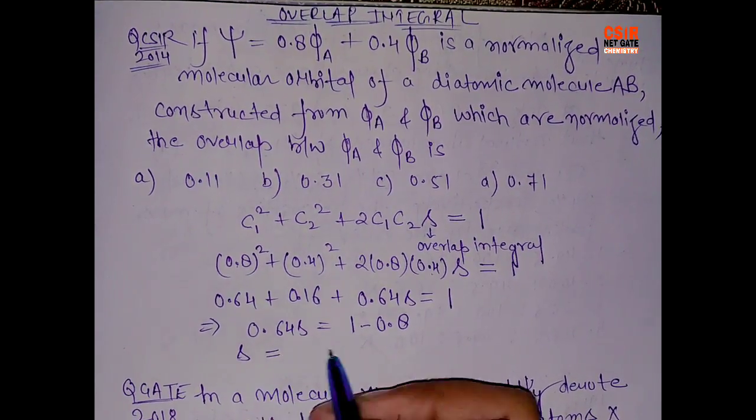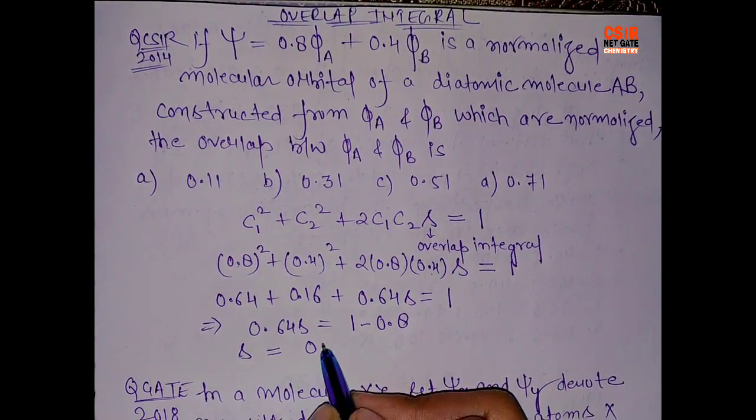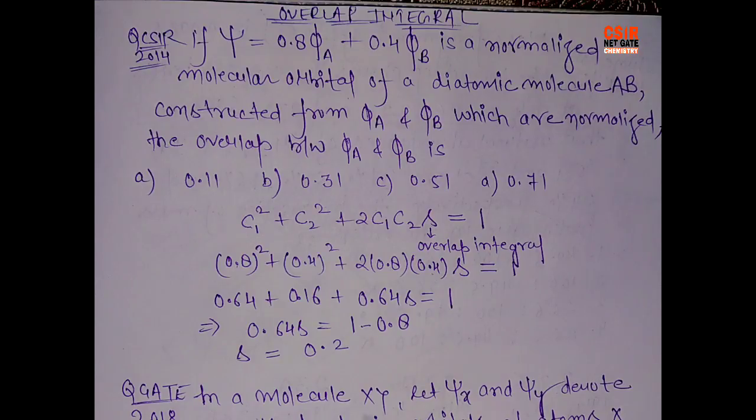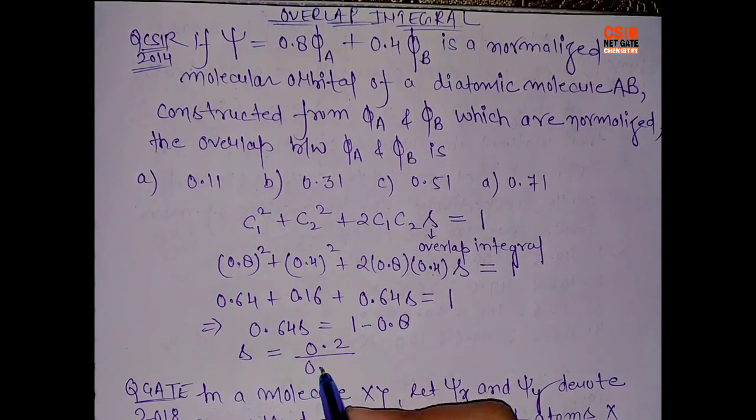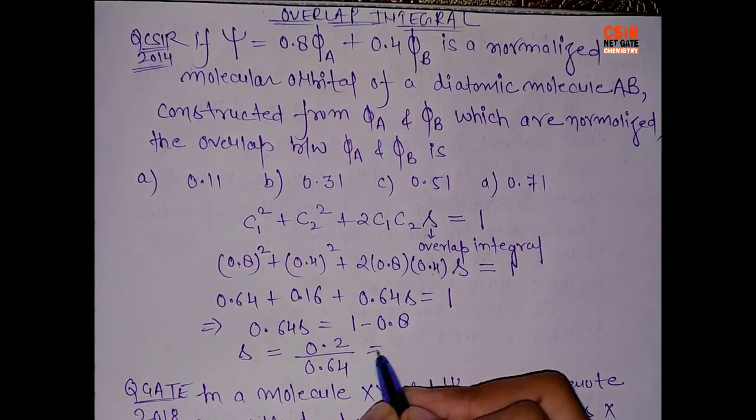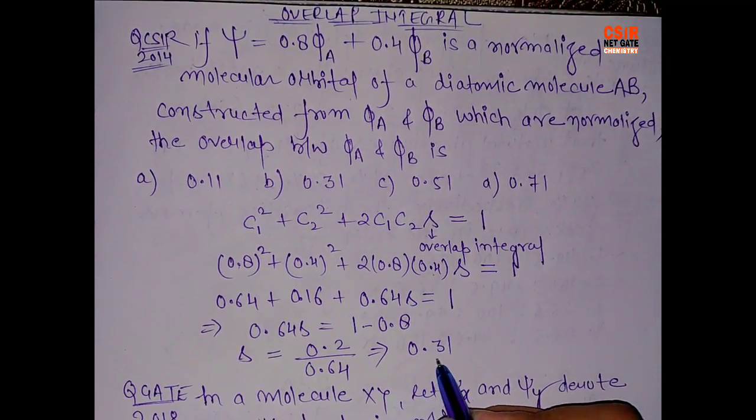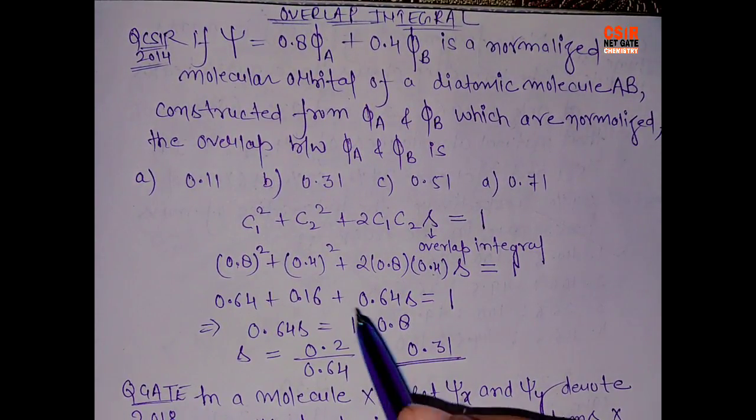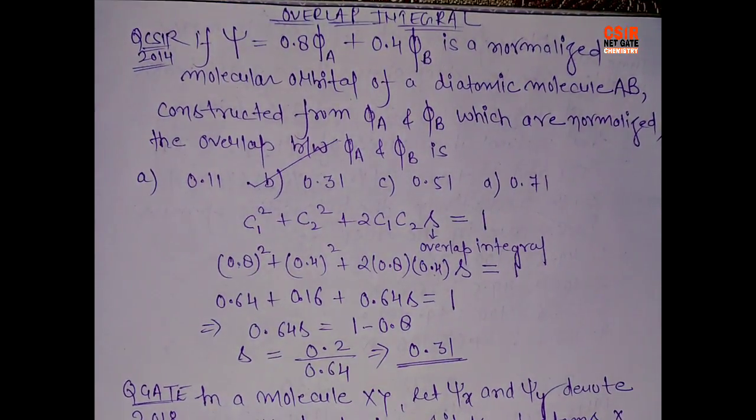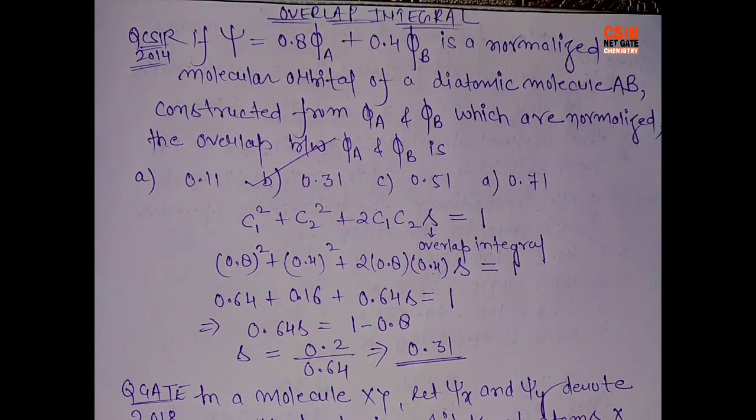So basically when you solve it, you will get s equals to 0.2 divided by 0.64. When you solve it, you will get around 0.31, and it is in option b. So it was a very easy question and generally you will find a question based on this topic.